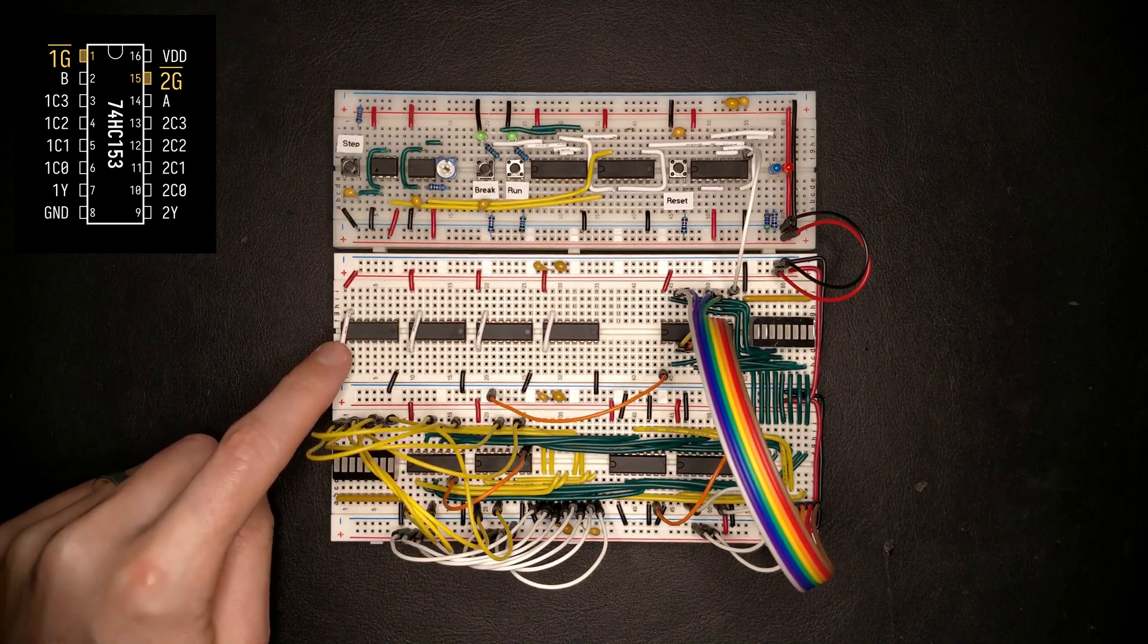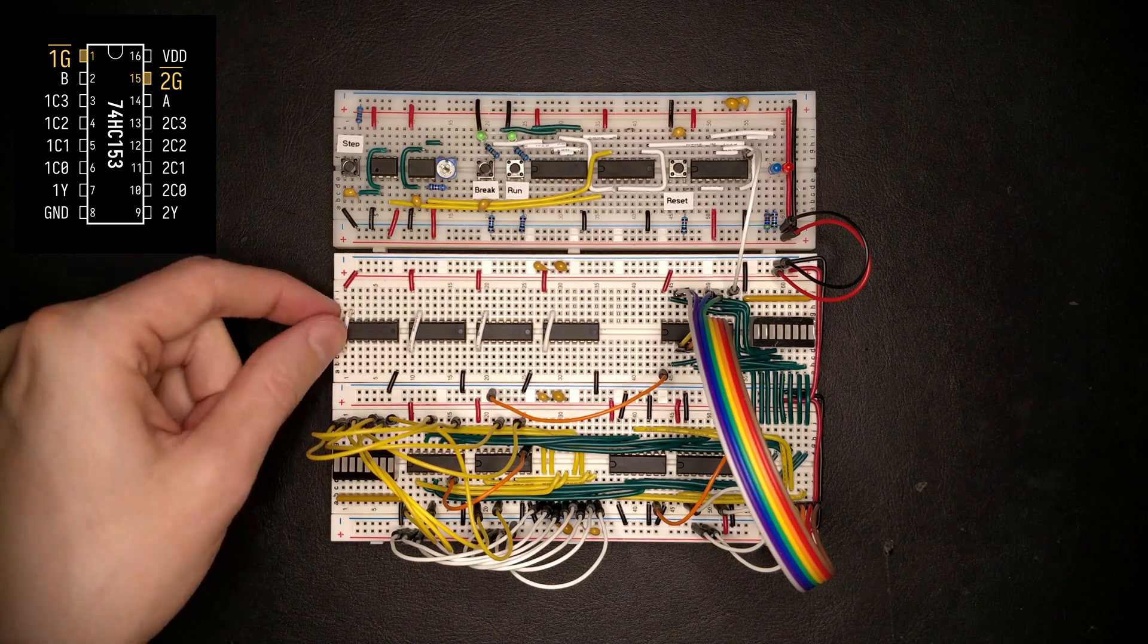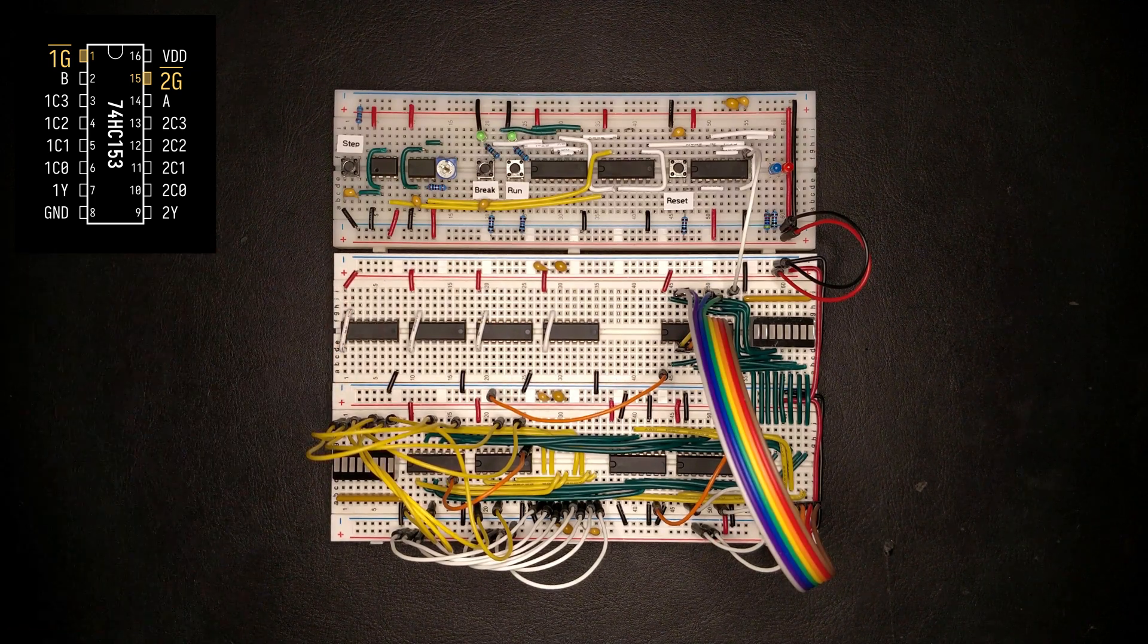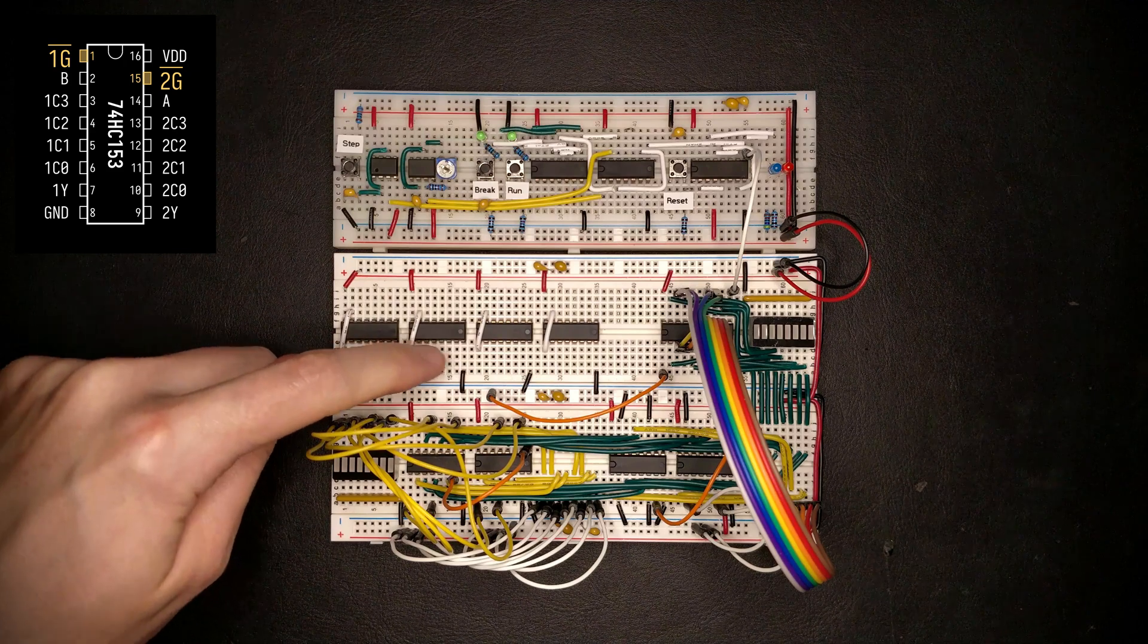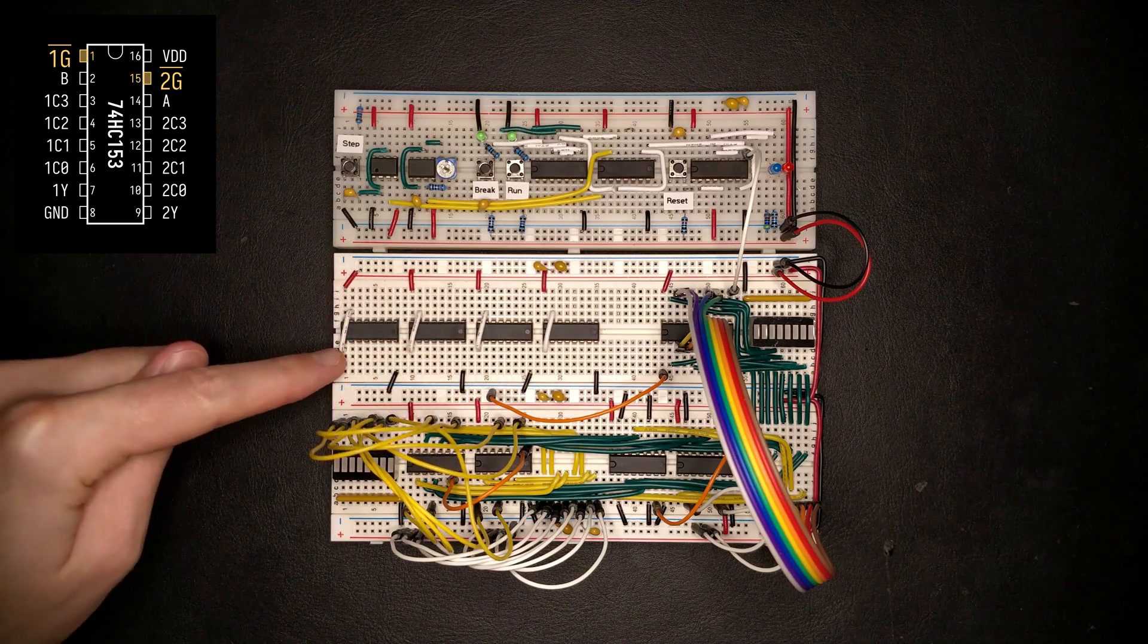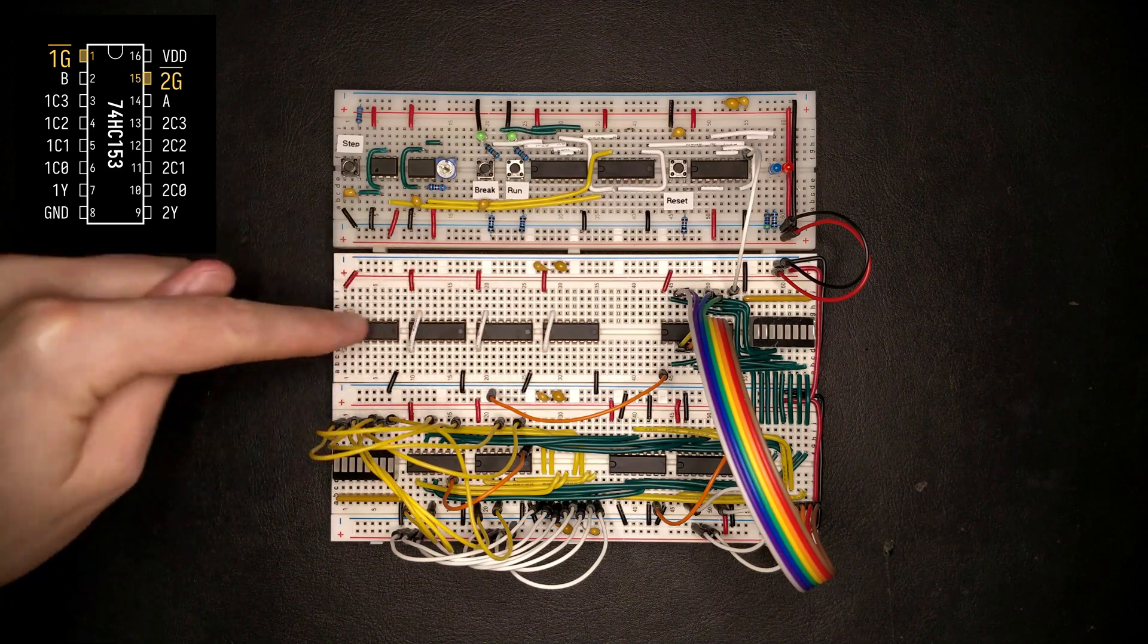There we go. So if we enable one of the multiplexers of the chip, the other one is enabled at the same time. Now let's connect the G inputs of each of the chips together into basically one single control line for the entire multiplexer.